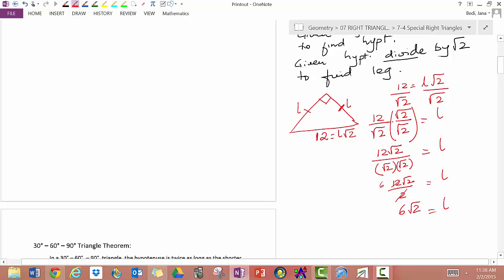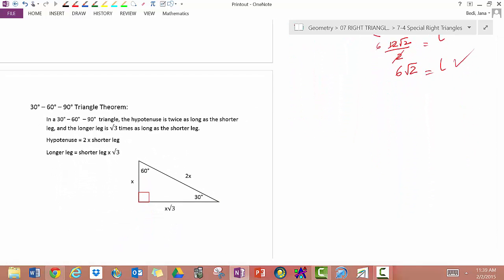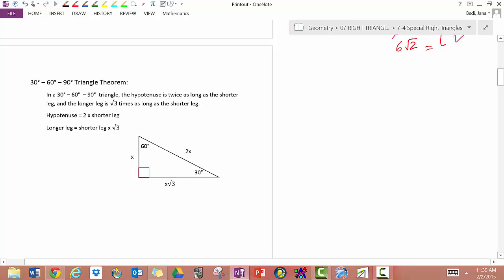Do a quick mental check. If I multiply 6 root 2 by root 2, will I get 12 for the hypotenuse? Yes. So my leg is correct. The next triangle, special triangle we're going to look at, is the 30-60-90 triangle.